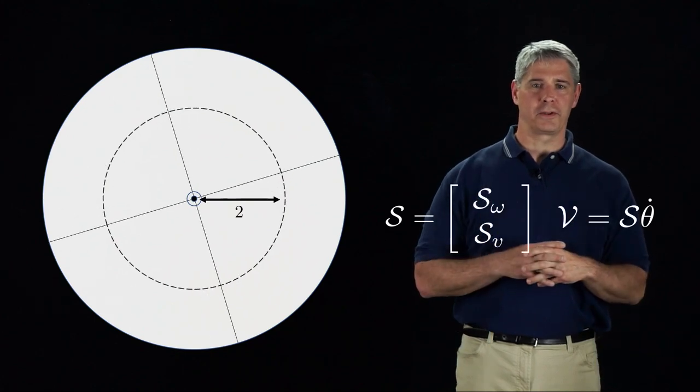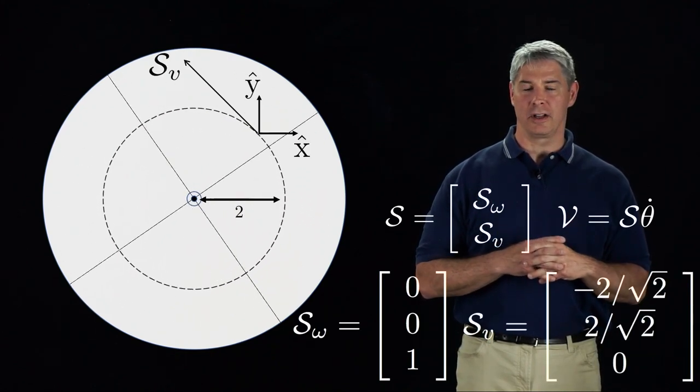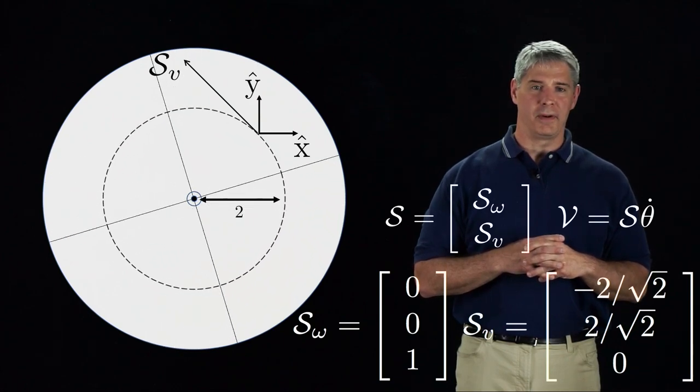We can choose a reference frame at a different location. In this frame, the angular velocity is the same as before, but Sv is different.